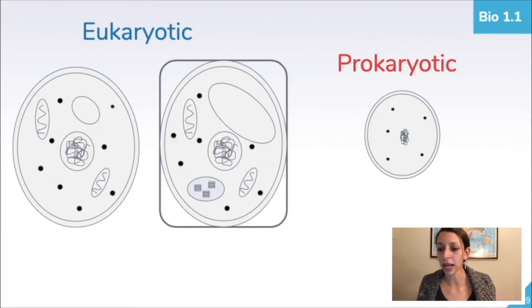Sometimes there'll be external features, like our flagella, which is for movement, or cilia, also for movement. Those are small hair-like structures. Those can exist in prokaryotic organisms, but, again, not all prokaryotic cells have those.